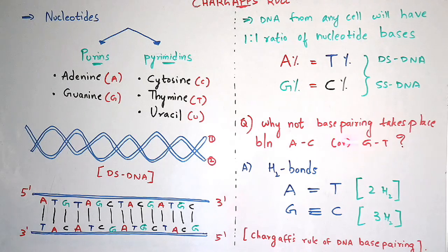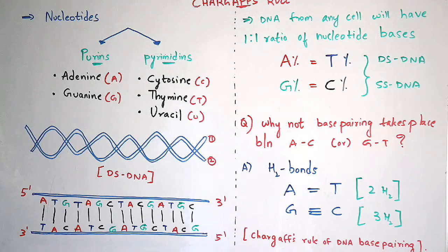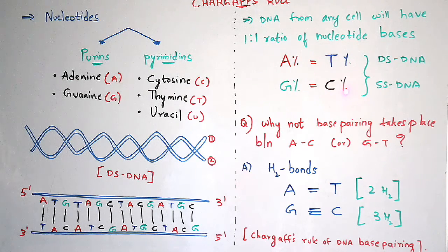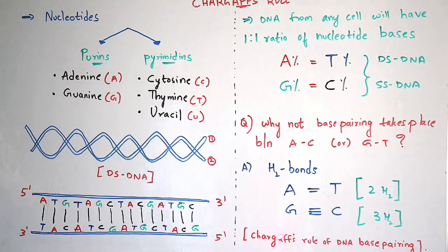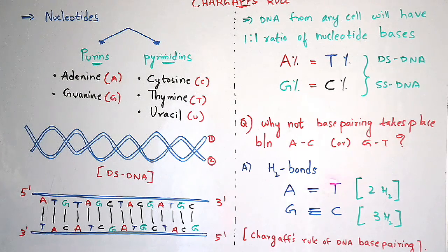Why does base pairing not take place between adenine and cytosine, or guanine and thymine? The reason is due to hydrogen bonds. The ability of hydrogen bonding takes place only between adenine-thymine and guanine-cytosine. Adenine and thymine consist of two hydrogen bonds — a double bond — while guanine and cytosine consist of three hydrogen bonds — a triple bond. Guanine does not make a base pair with thymine because the hydrogen bonds do not have the ability to maintain that type of bonding.